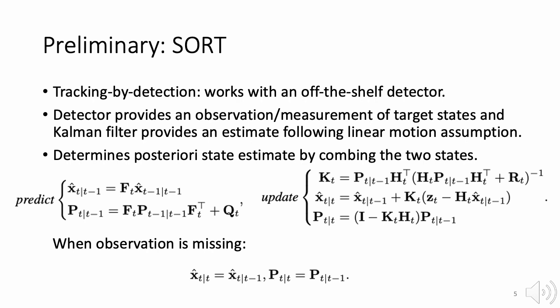When no observation is available, SORT directly uses the prior estimation from Kalman filter predict as the posterior estimation outcome.